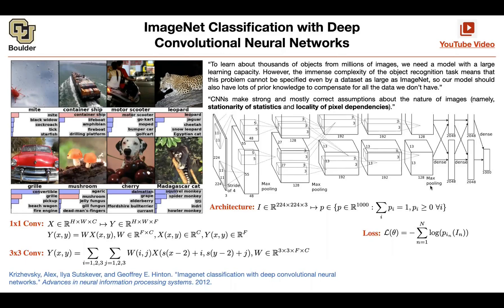Now to go from this dimension to 2048, you need to multiply by a matrix — that's what this dense layer is doing. You're going to multiply by a matrix of size 21,632 by 2048, and that matrix takes you from this huge dimension down to a smaller dimension. Does that answer your question?